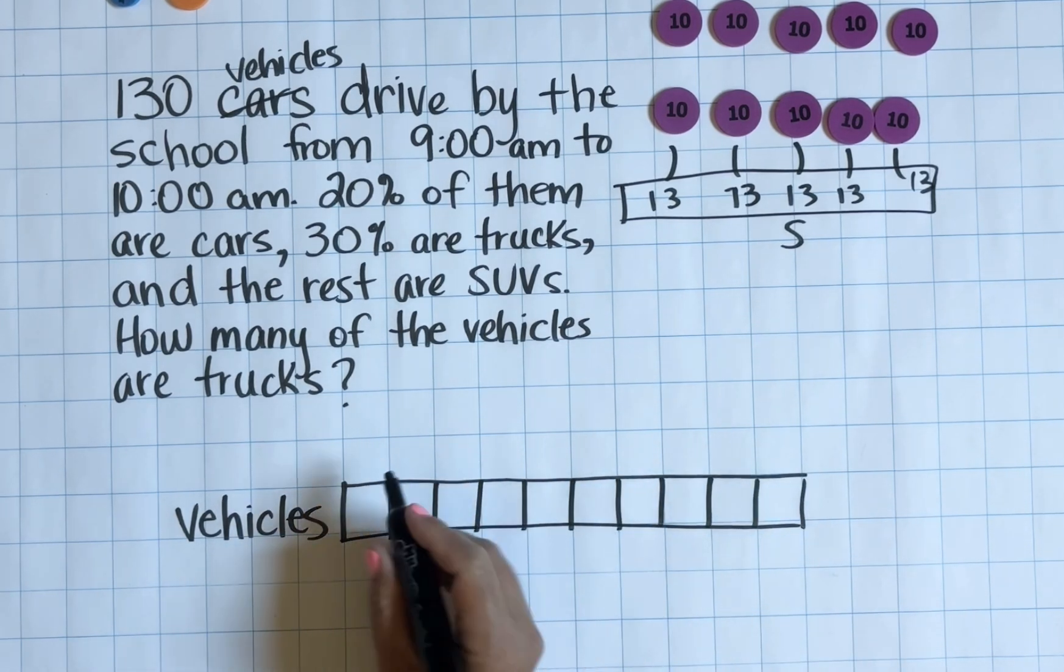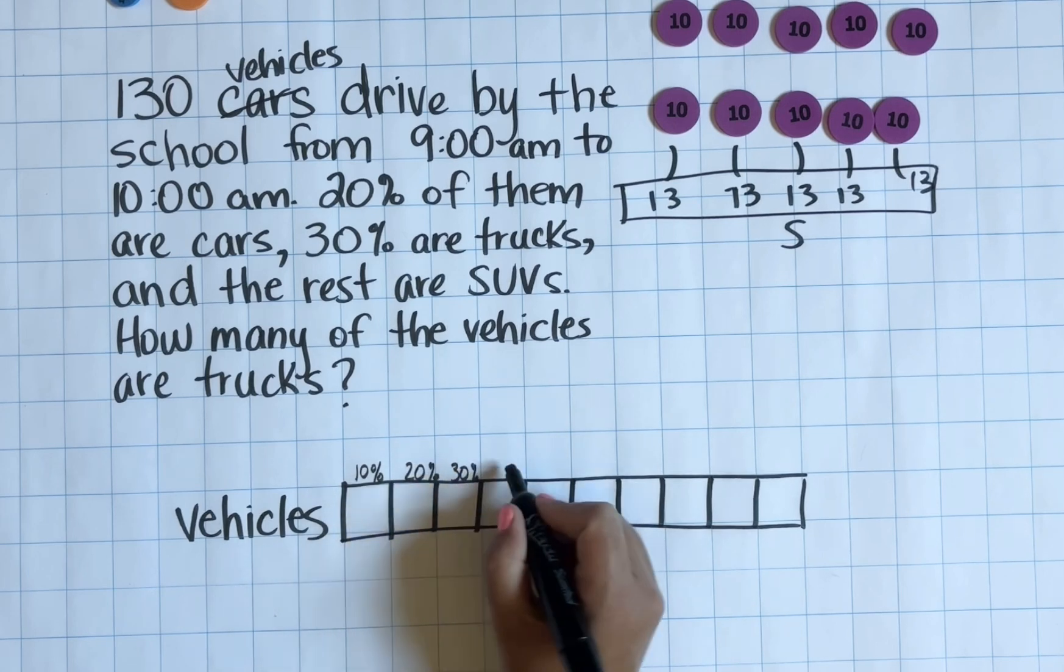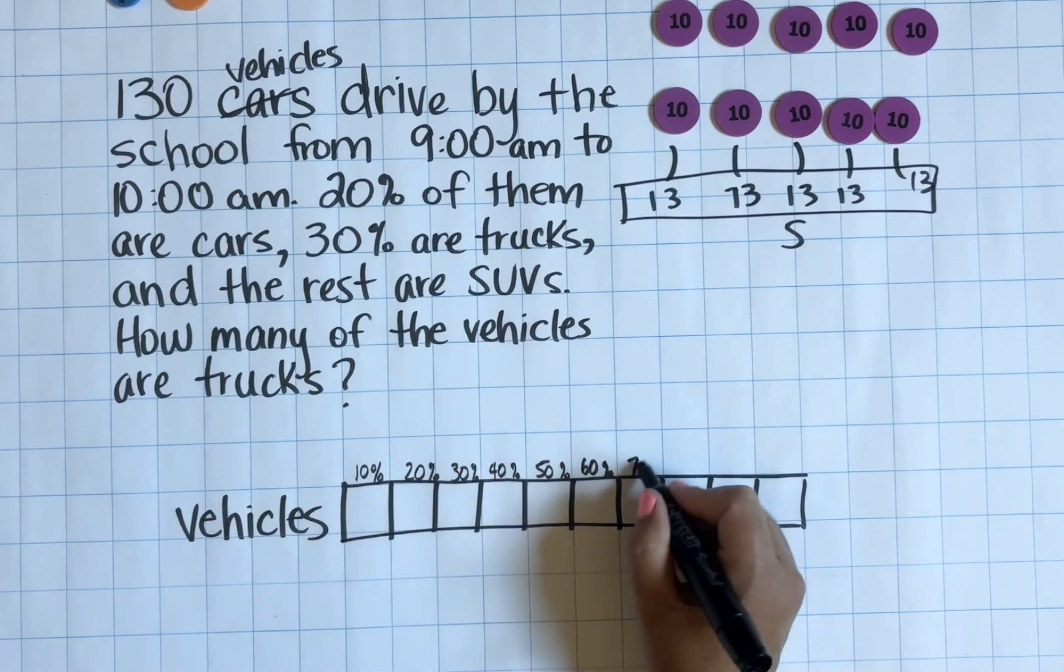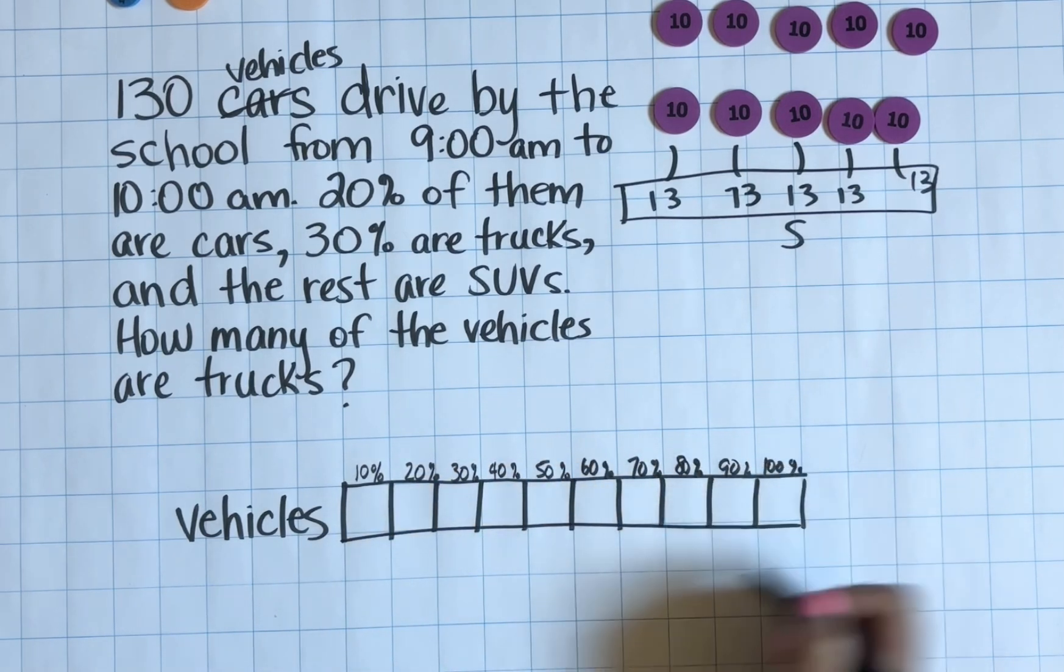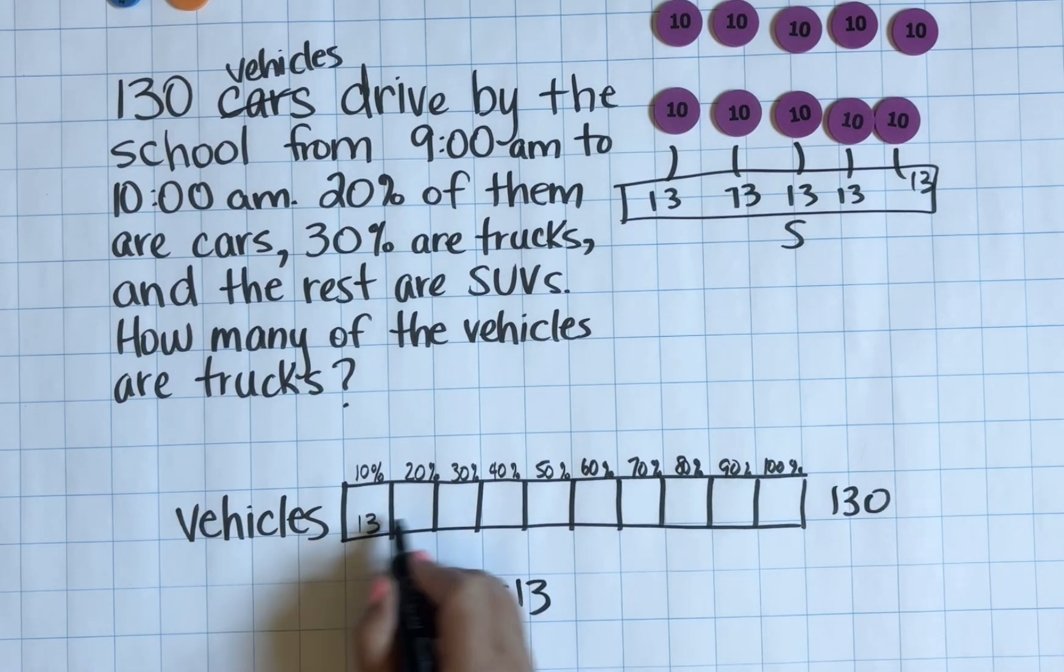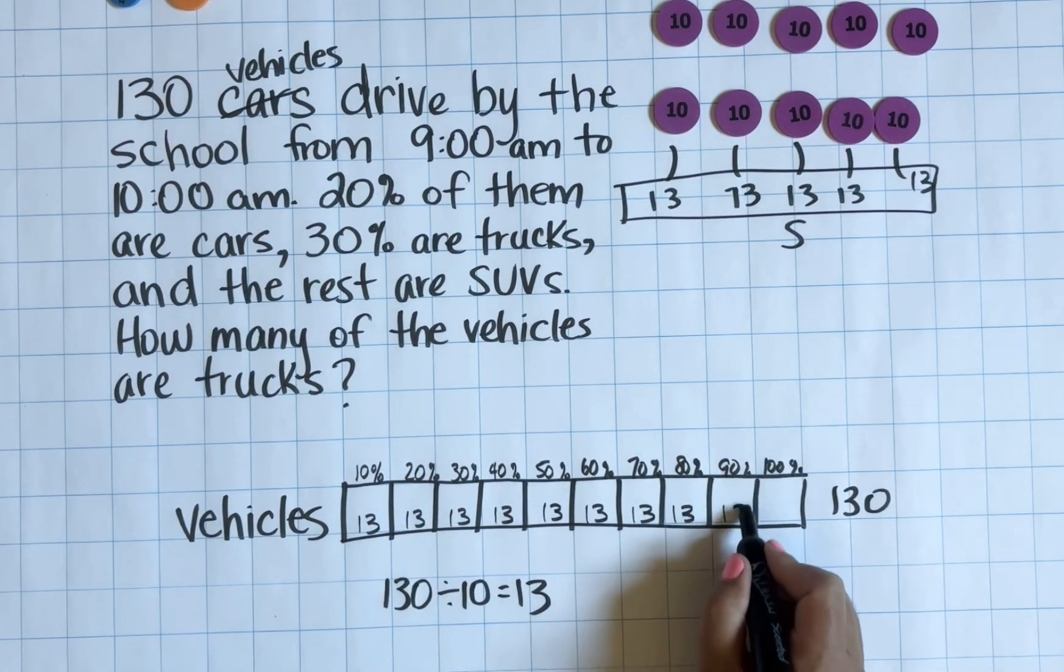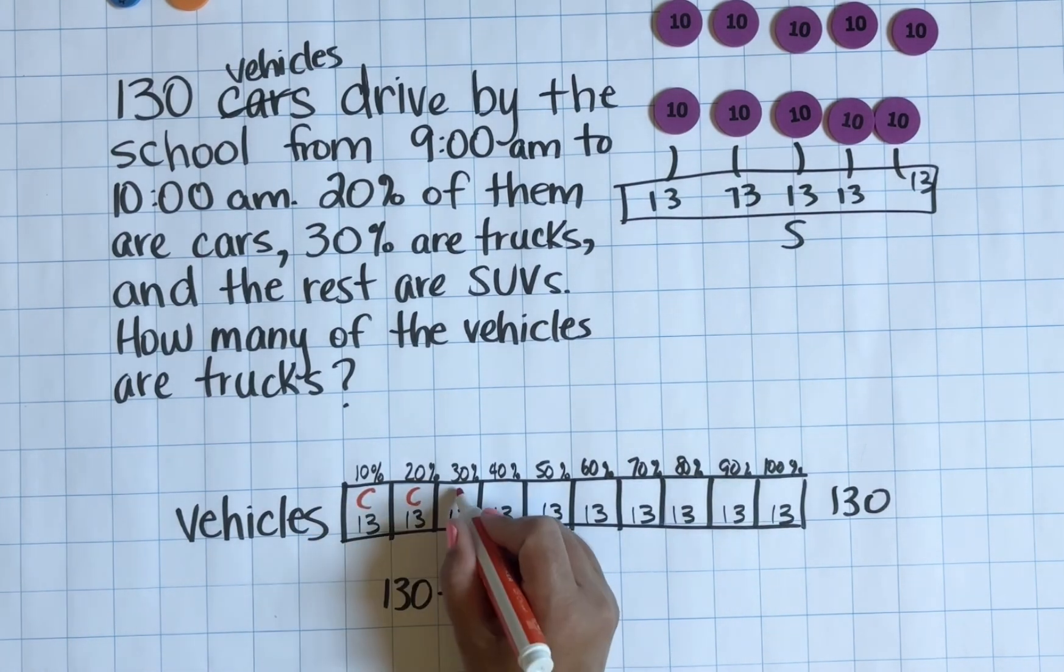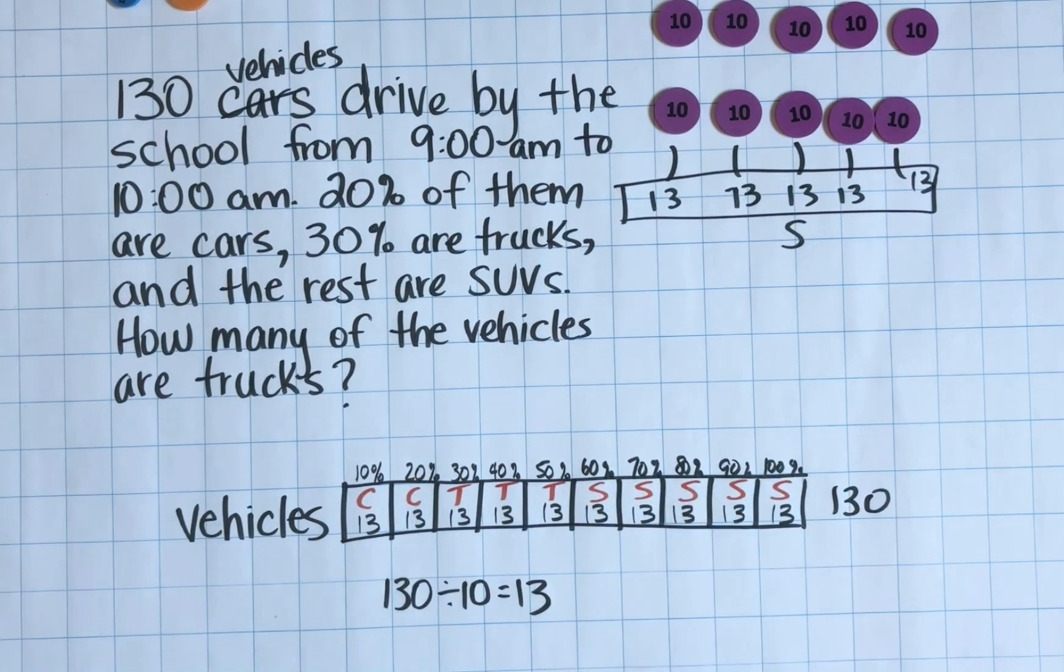Let's take a look at how we can relate this to a bar model. Here I'm drawing one bar that represents all of our vehicles, and each part of the bar model represents 10% of those vehicles to make a total of 100%. We know that there are 130 altogether, so each part of the bar model represents 13 vehicles.